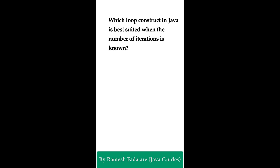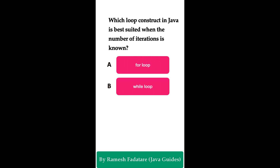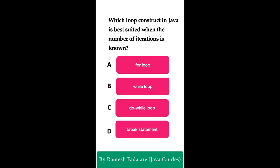Welcome to Java Quiz Series. Which loop construct in Java is best suited when the number of iterations is known? Option A: for loop, Option B: while loop, Option C: do-while loop, Option D: break statement. You have five seconds to answer. The correct answer is the for loop.